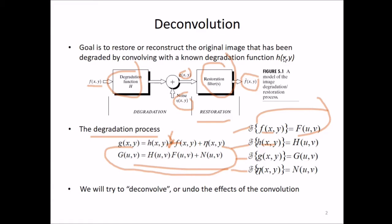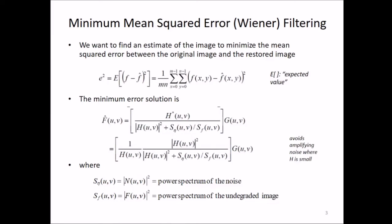Today's discussion is about deconvolving, or undoing the effect of this convolution. We introduce the minimum mean square error, or Wiener filtering. What we want is to find an estimate of the image that minimizes the mean squared error between the original image and the restored image — the least this difference is, the better our process will be.